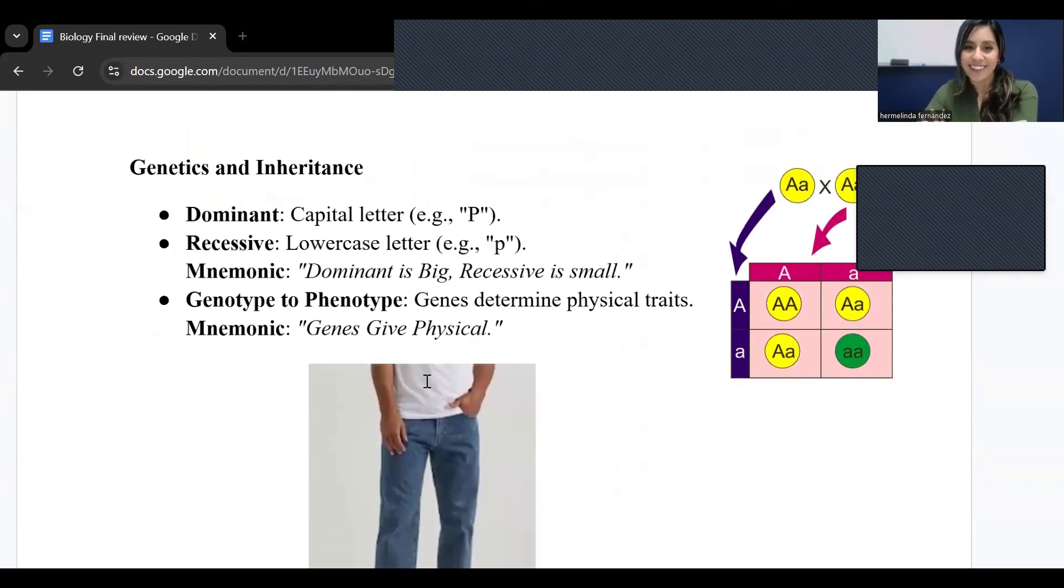Genetic inheritance. We have our dominant, which is going to be our capital letter. Dominant is the one that dominates the situation here, so that's going to be our capital letter. And then we have recessive, which is going to be our lowercase letter. An example here, capital A would be the dominant and lowercase a would be recessive. So dominant is big, recessive is small.